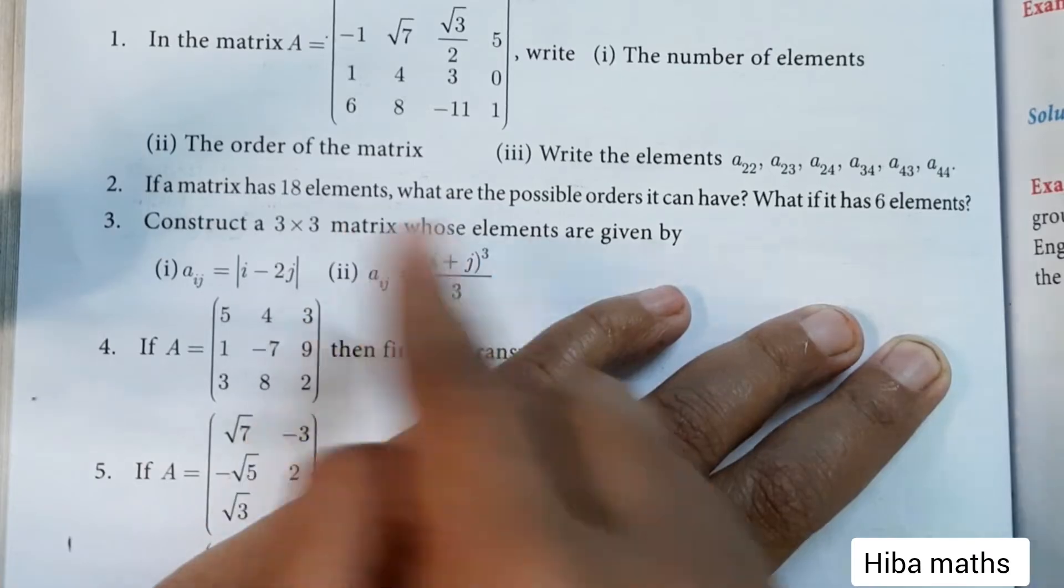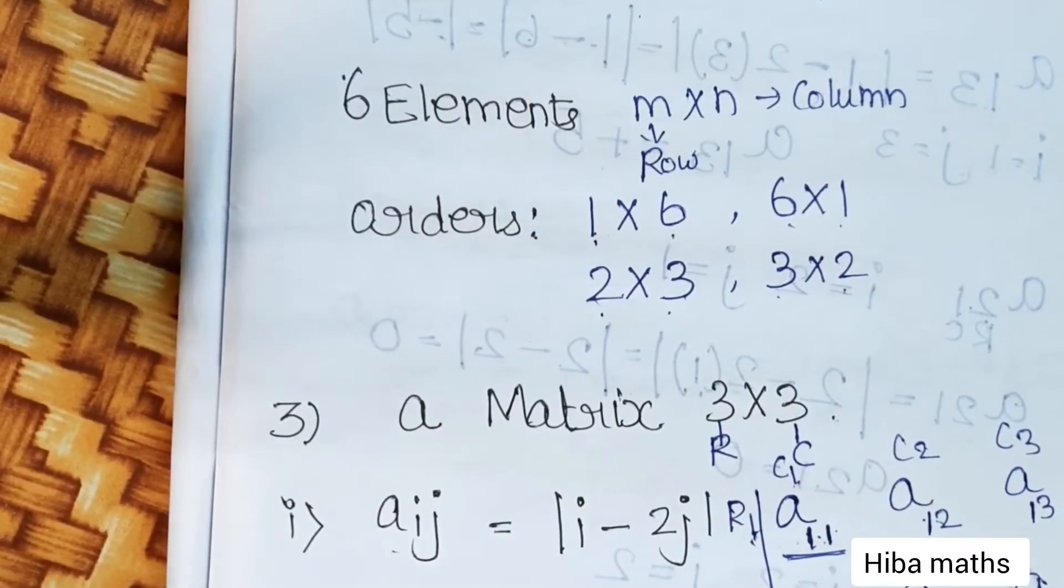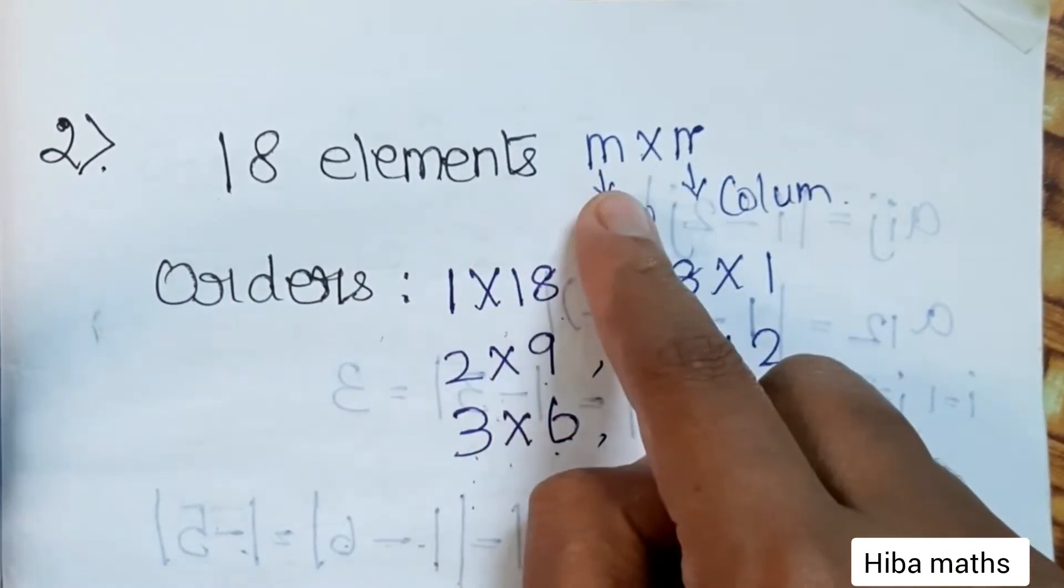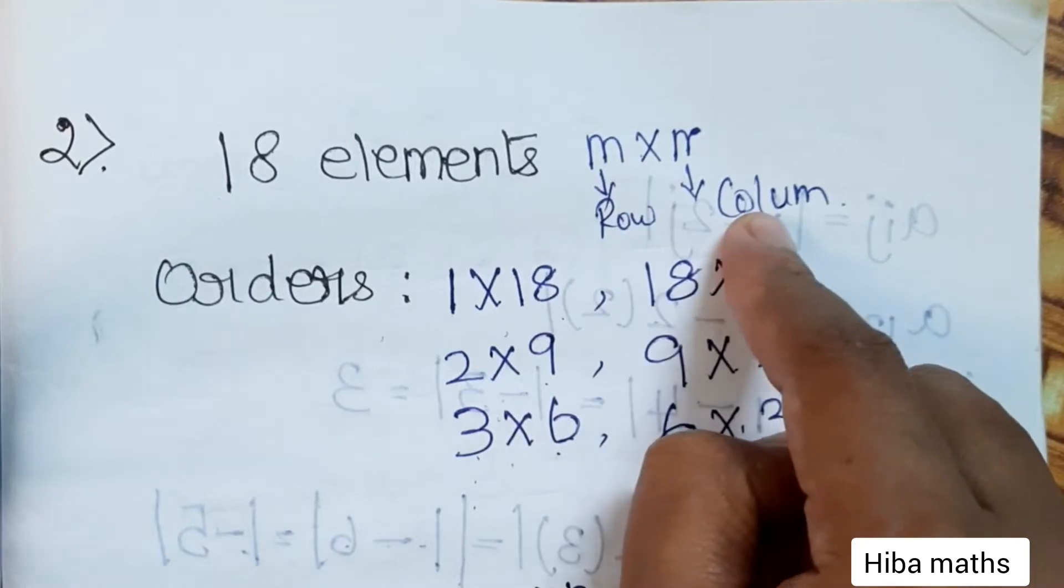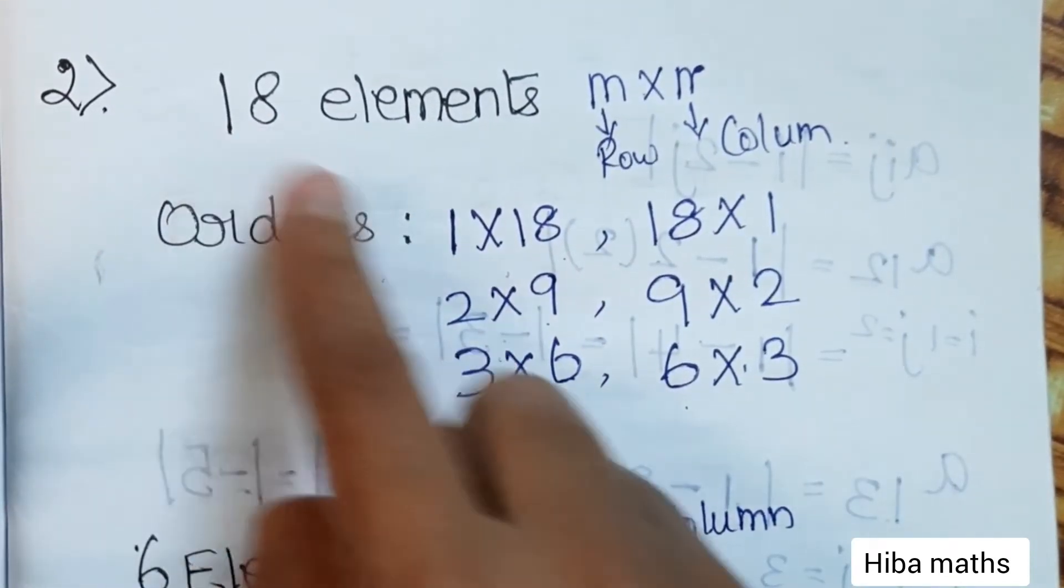So first, 18 elements and then 6 elements - two questions here. First, 18 elements: the order is m into n, row into column. First step is row, then column. Now to find the orders, we need the factors of 18.